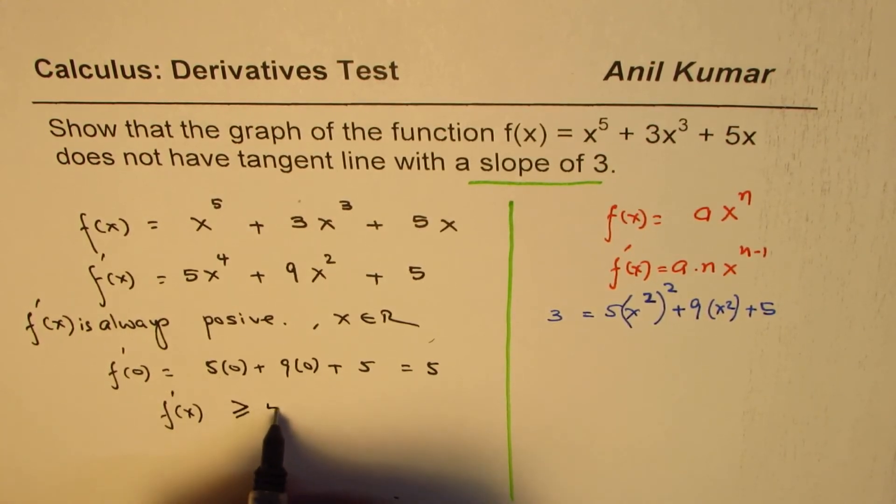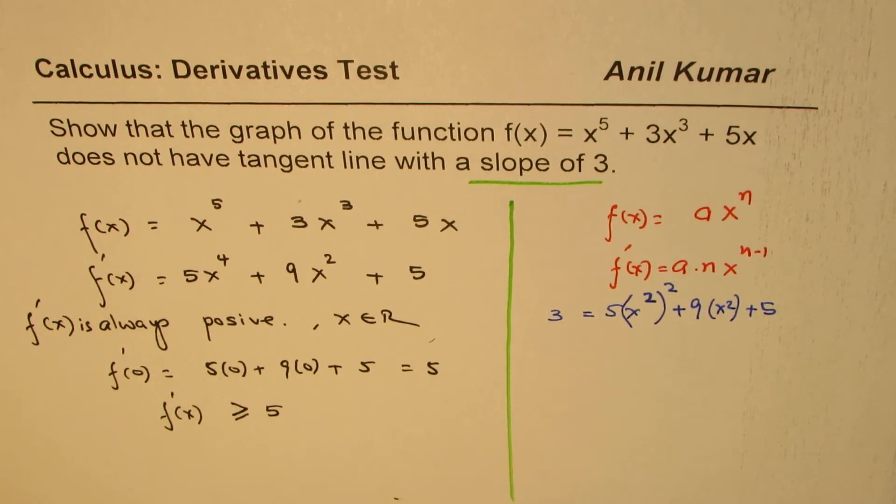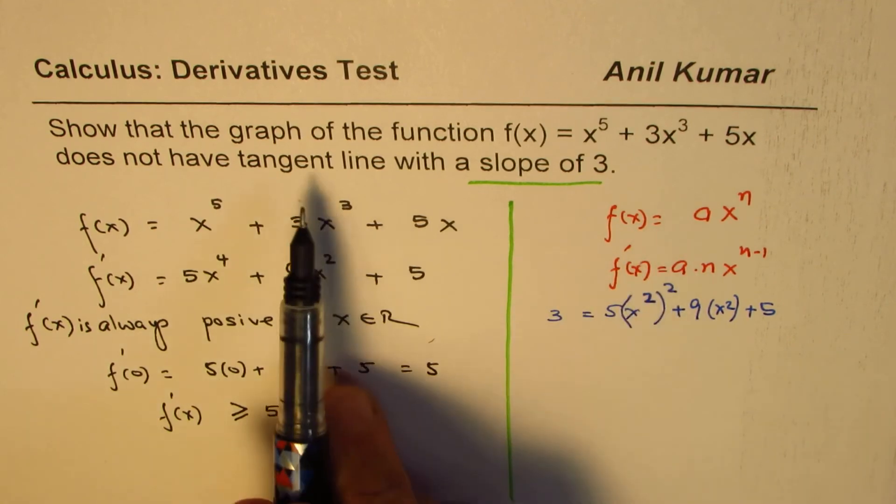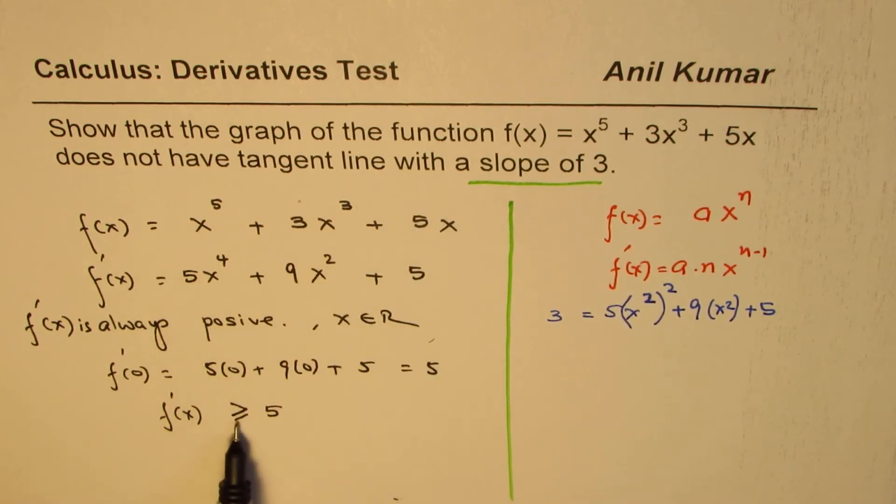So therefore, you'll find that f'(x) is actually greater than or equal to 5, always. Now if you show that f'(x), that is the slope of the tangent line, is always greater than or equal to 5, so it can never be 3. That's the whole reason. You understand?